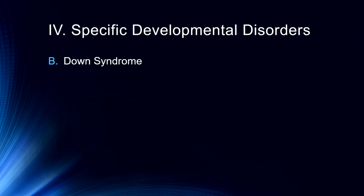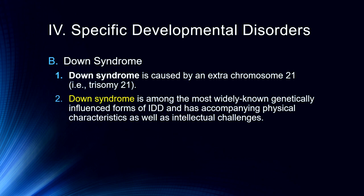The first specific developmental disorder we'll talk about is the most common, which is Down syndrome. It's caused by an extra chromosome 21, called trisomy 21 technically. This is a purely genetic disorder. There is a lot of controversy about prenatal genetic testing for this disorder, which is a very difficult decision for people to often make.